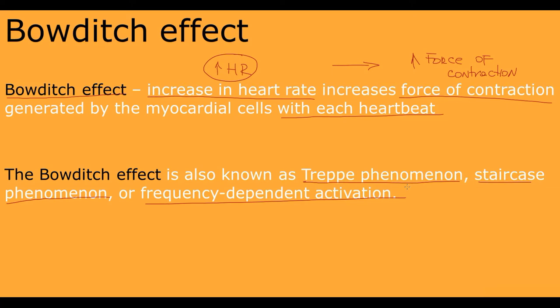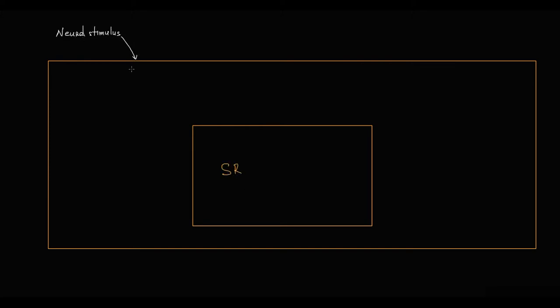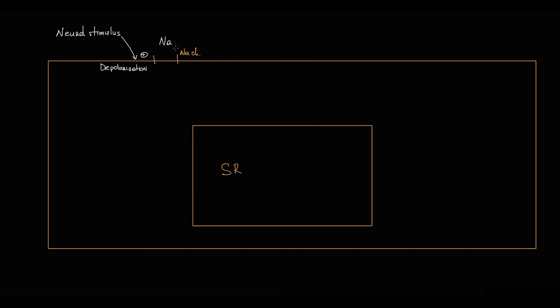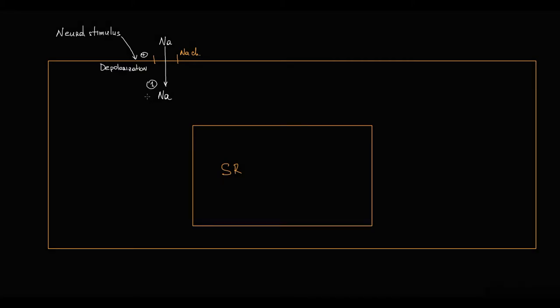To explain the Bowditch phenomenon, we need to understand the normal physiology of cardiomyocyte contraction. When a neural stimulus reaches the sarcolemma — the cell membrane of cardiomyocytes — it causes depolarization by activation of voltage-gated sodium channels. Because sodium is an extracellular ion, it enters the cell by concentration gradient. This sodium is subsequently extruded from the cell by sodium-potassium ATPase.